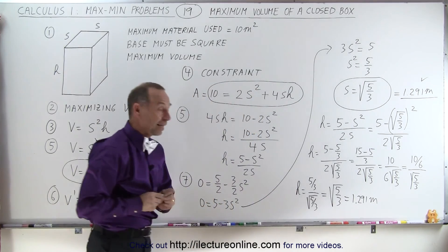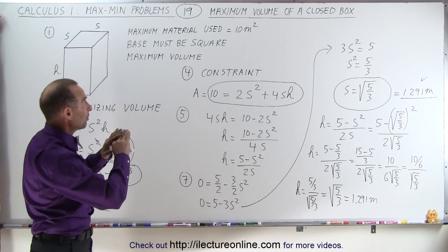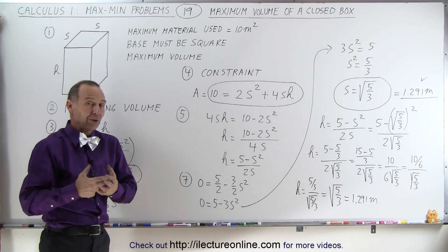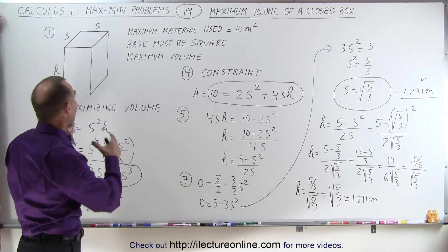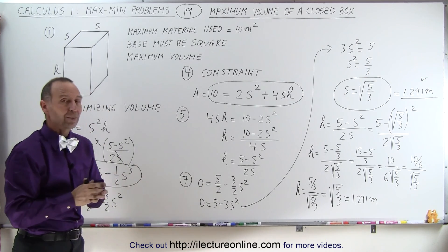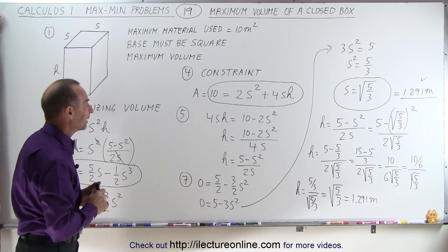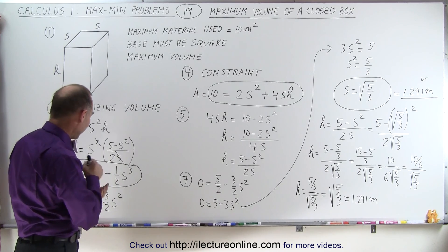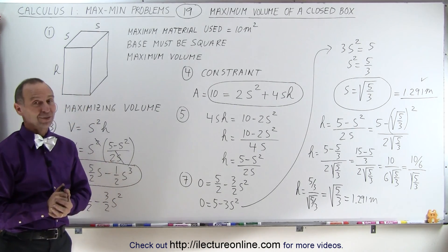That means that even though we are restricted to using 10 square meters of material to make the box and we're trying to find the maximum volume, the box must be a cube — not a rectangular box. The height and the sides are all the exact same size. And that's how it's done.